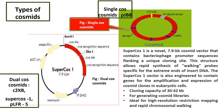The cloning capacity of SuperCos-1 is 30 to 42 KB. It is used for generating Cosmid libraries, ideal for high-resolution restriction mapping and rapid chromosomal walking.